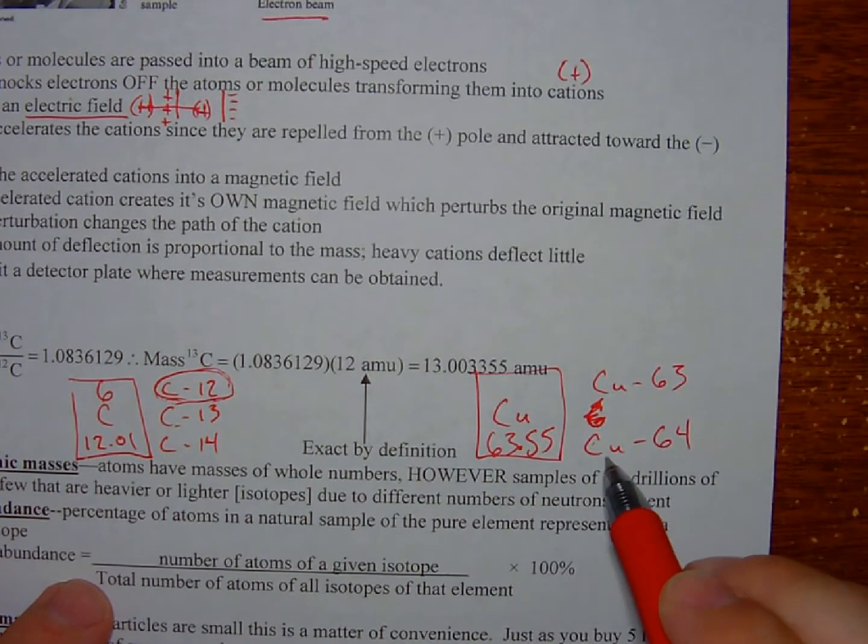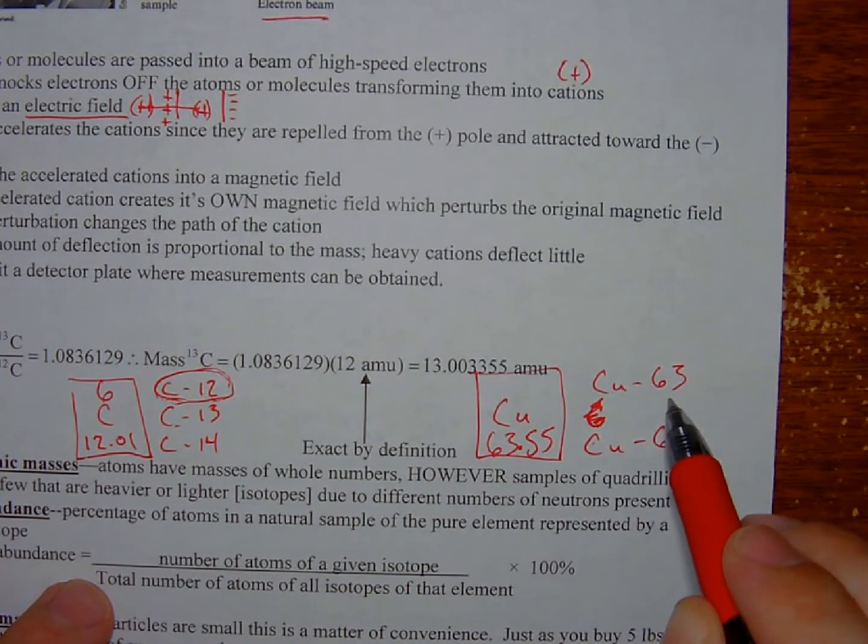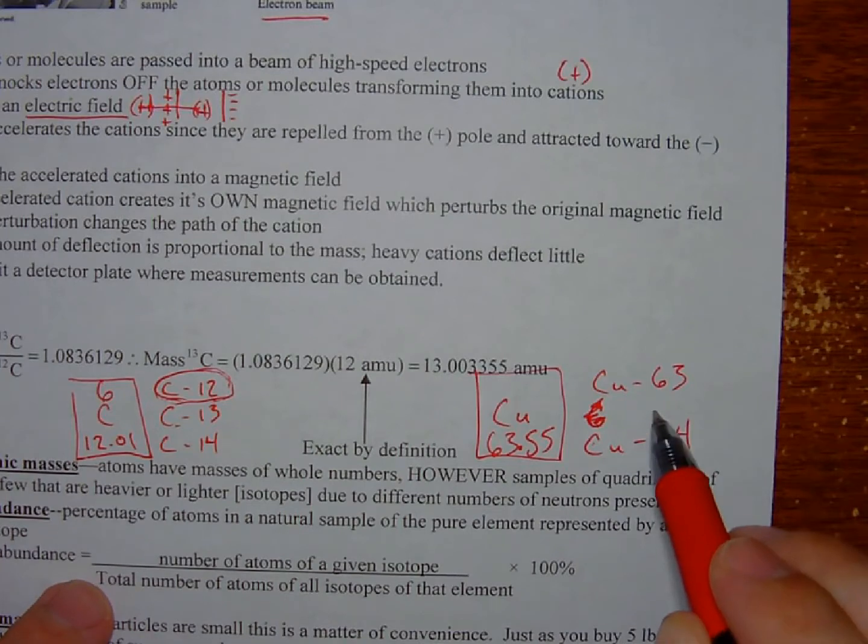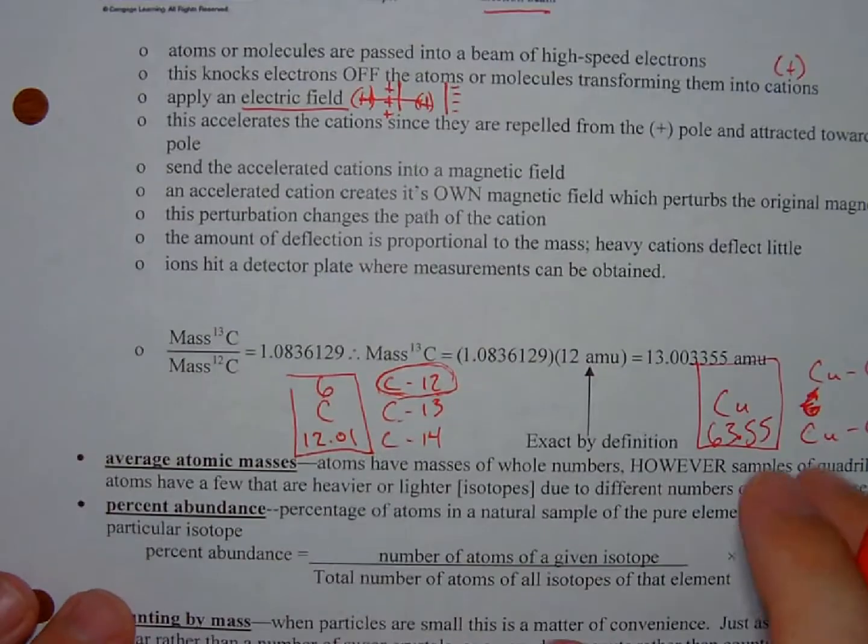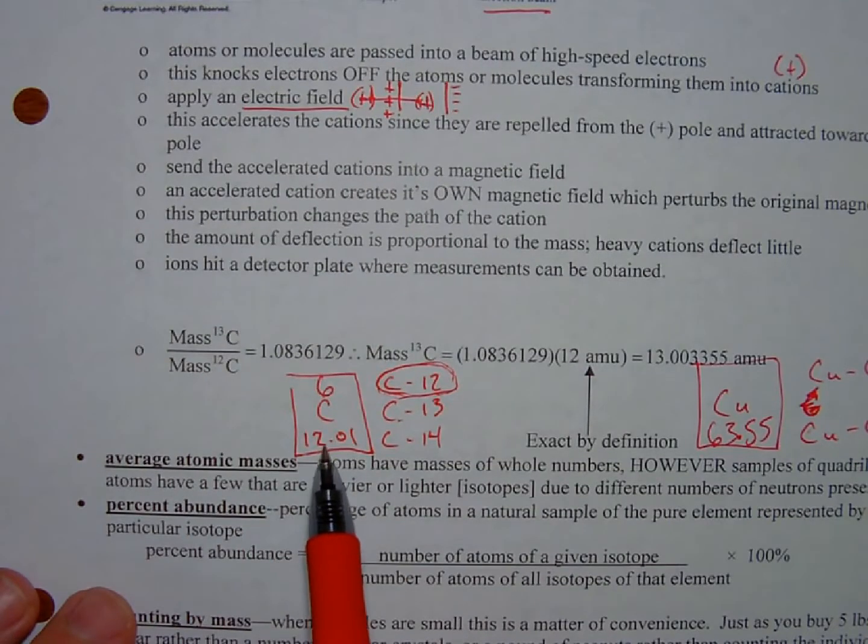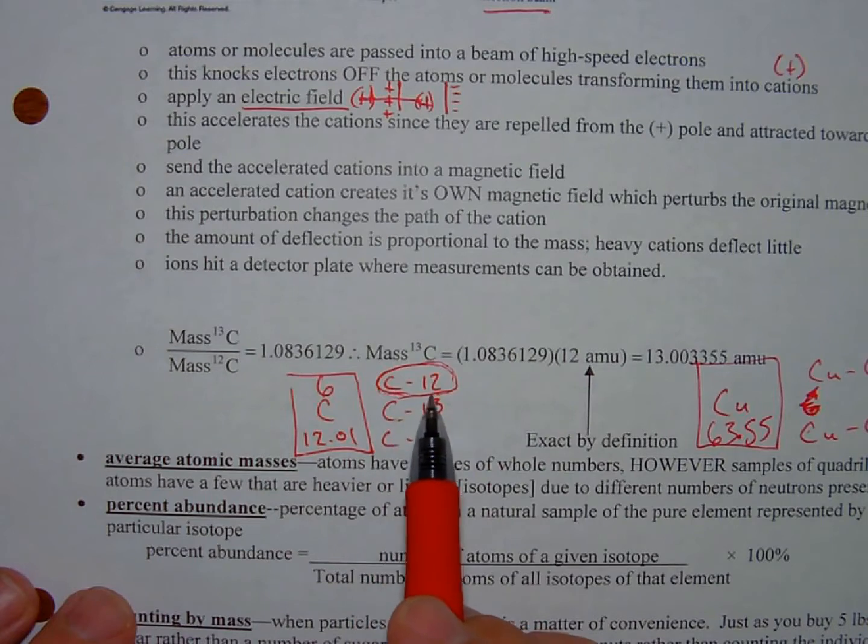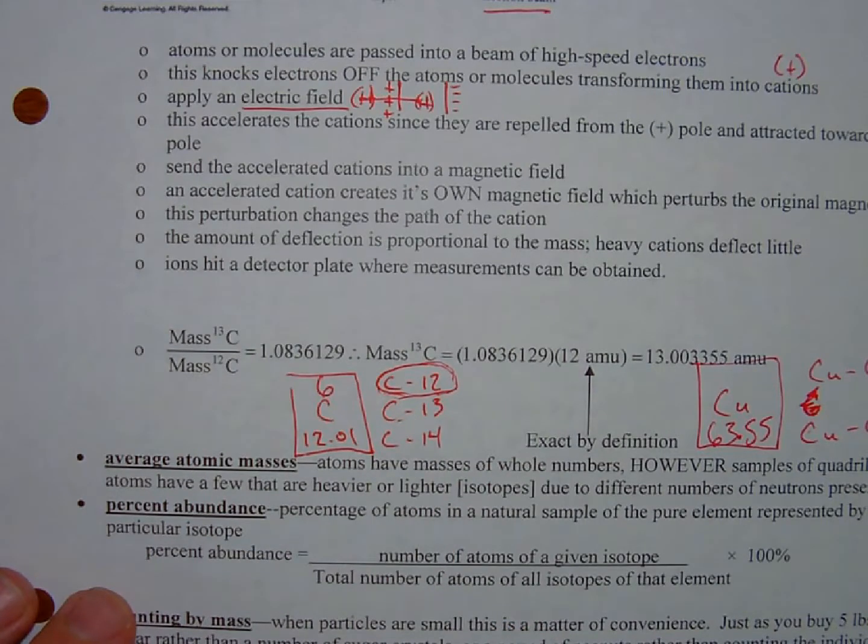There's just going to be a little bit more copper-64 than there is copper-63. But it's a lot closer to a 50-50 distribution, especially compared to something like carbon here, where the vast majority of carbon in our world is carbon-12.